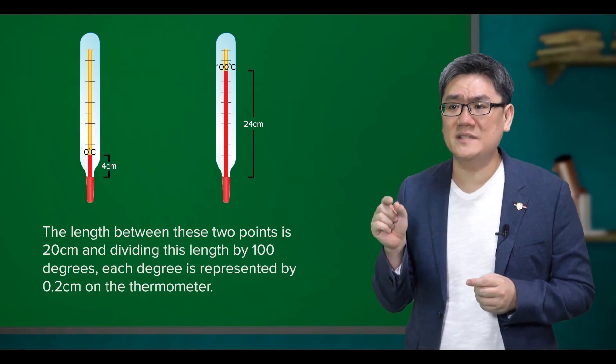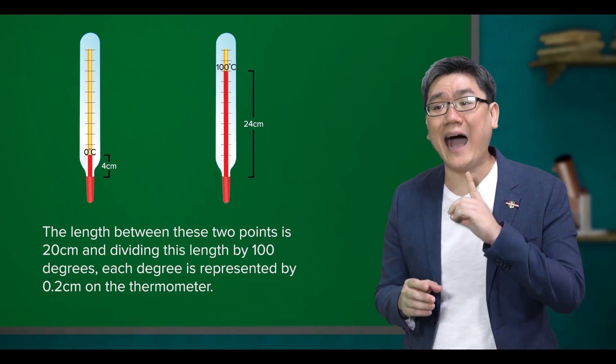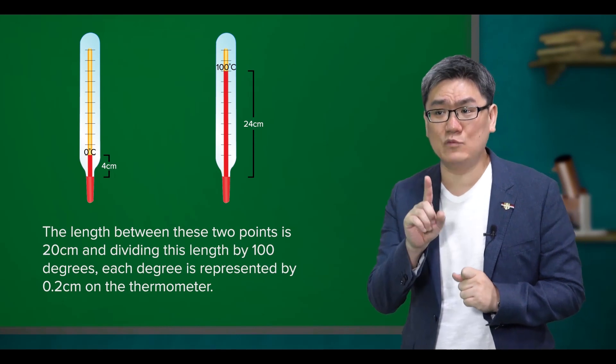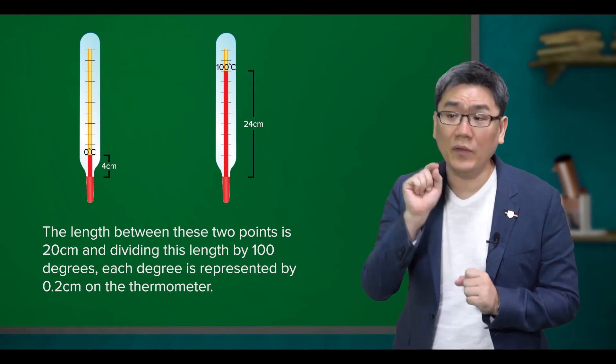The length between these two points is 20 centimeters and dividing this length by 100 degrees, each degree is represented by 0.2 centimeters on the thermometer.